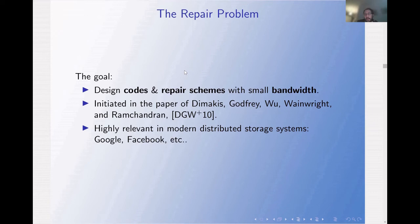Google and Facebook already deploy codes in their storage systems. Even in these distributed storage systems, the failure of a node is not a rare incident — it happens. When it happens, bandwidth is a critical issue. So minimizing it is an important problem in coding for distributed storage systems.